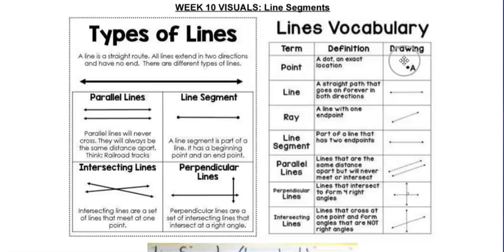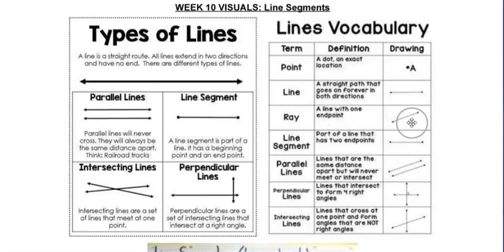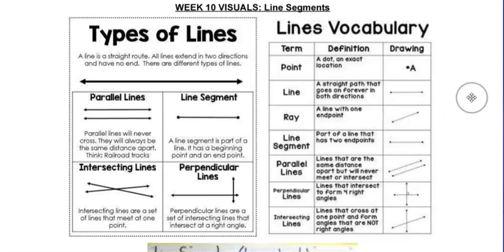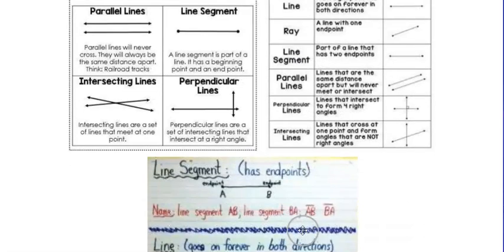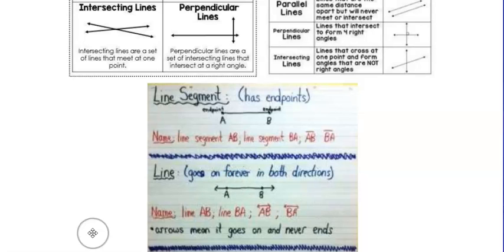A point is just an exact location. A ray has an endpoint and then an arrow on the other side — it has a starting point but never ends on the other side. We've now covered a line segment, parallel lines, perpendicular lines, and intersecting lines.